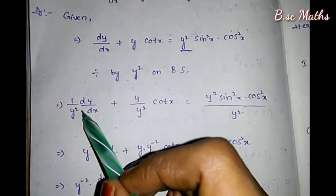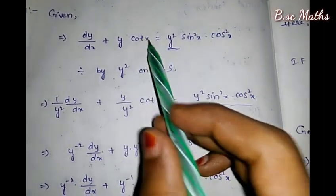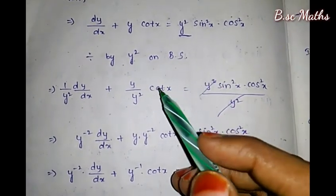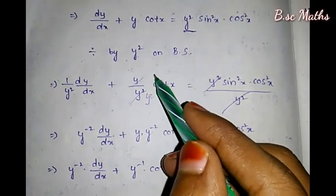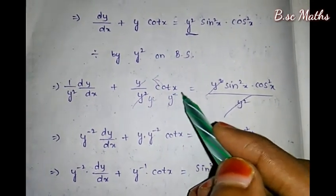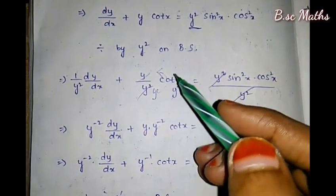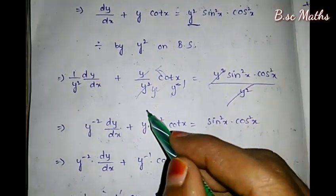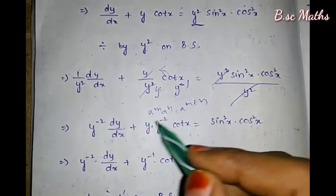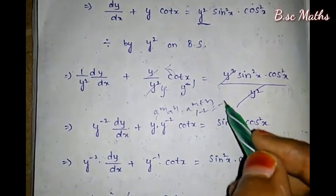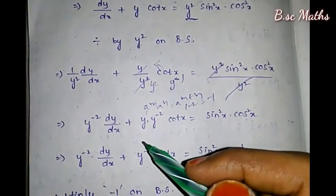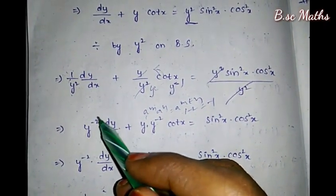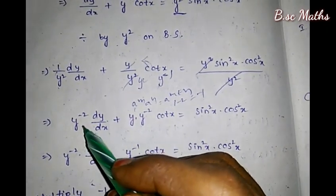If you apply this and solve, y² gets cancelled. So y cancels, giving y inverse. We use the exponent rule: y·y² = y^(1+(-2)) = y^(-1). So y to the power minus 1.